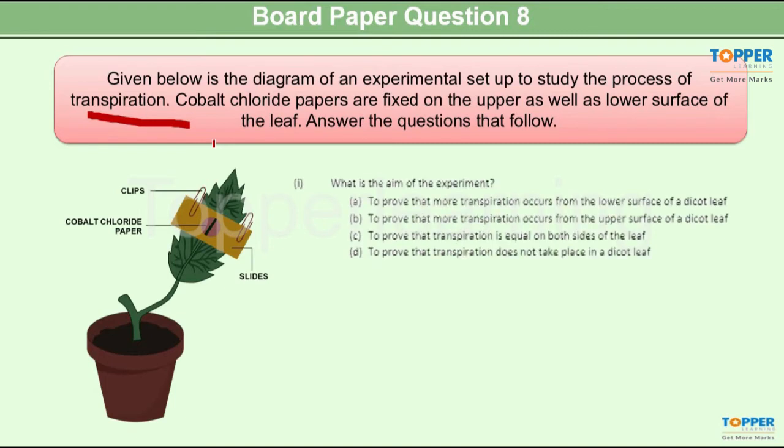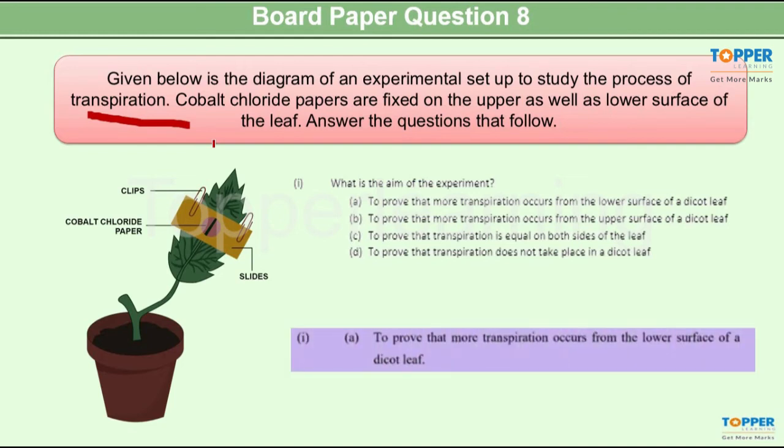Question 1. What is the aim of this experiment? Well the answer to this question is option A. The experimental setup deals with the process of transpiration and it is to prove that more transpiration occurs on the lower surface of a dicot leaf.